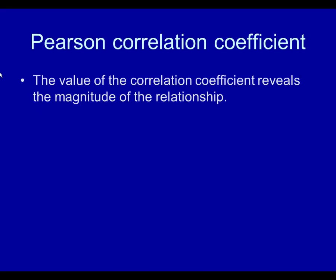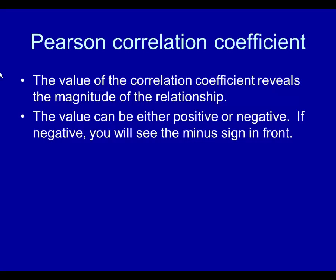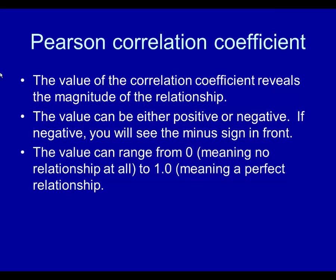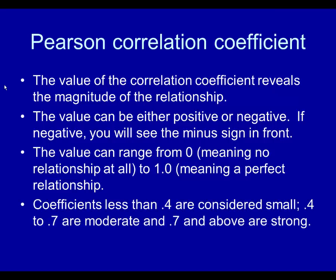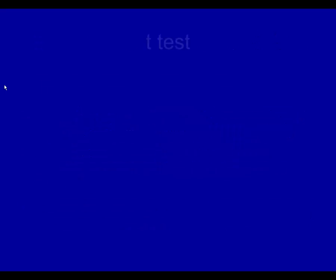The Pearson correlation coefficient: the value of the correlation coefficient reveals the magnitude of the relationship. The value can be either positive or negative — if negative, you will see the minus sign in front of the coefficient that represents the strength of the relationship. The value of the Pearson correlation coefficient can range from zero, meaning no relationship at all, to 1.0, meaning a perfect relationship. If it's 1.0, one variable fully explains the other. Coefficients less than 0.4 are considered small; 0.4 to 0.7 are moderate; and 0.7 and above are strong. This is a matter of opinion — it's one of those things in the literature that people express opinions about.